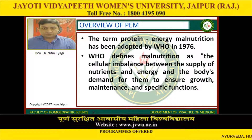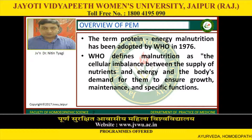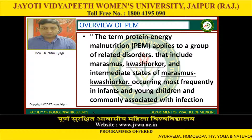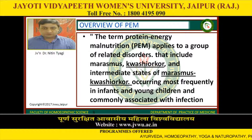Overview of Protein Energy Malnutrition. The term protein energy malnutrition has been adopted by WHO in 1976. WHO defines malnutrition as the cellular imbalance between the supply of nutrients and energy and the body's demand for them to ensure growth, maintenance and specific functions. The term protein energy malnutrition applies to a group of related disorders that include marasmus, kwashiorkor, and intermediate states of marasmus-kwashiorkor, occurring most frequently in infants and young children and commonly associated with infections.